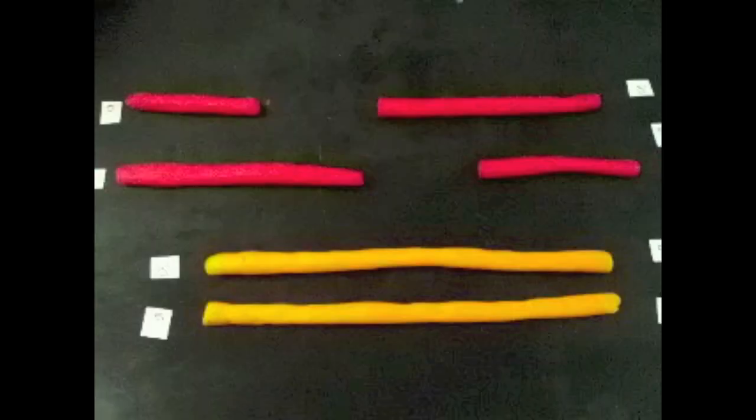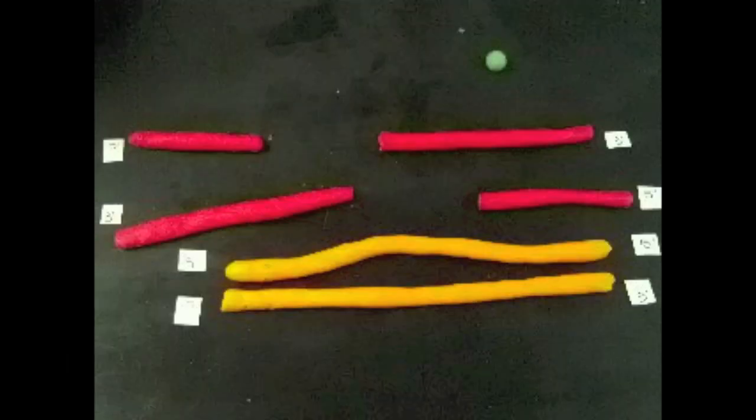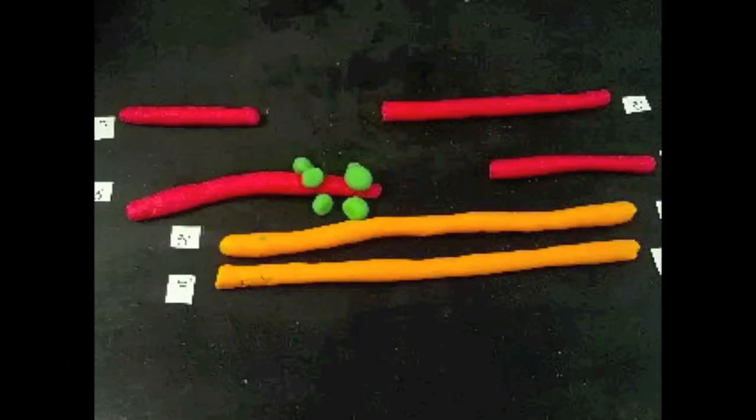Now, the homologous strand comes into play. RecA then assists the 3' overhang to invade the homologous strand.